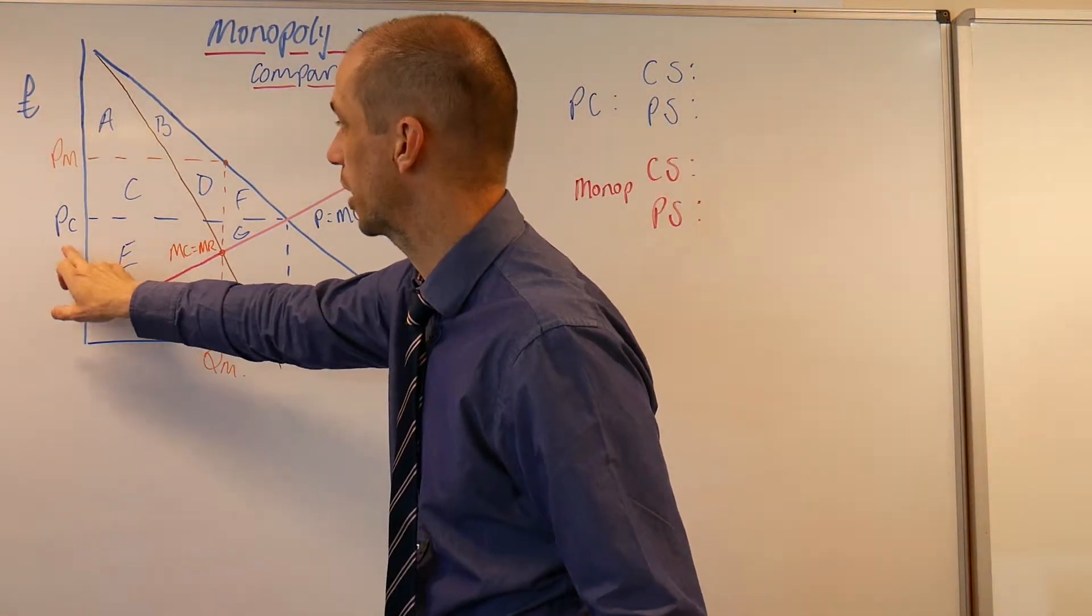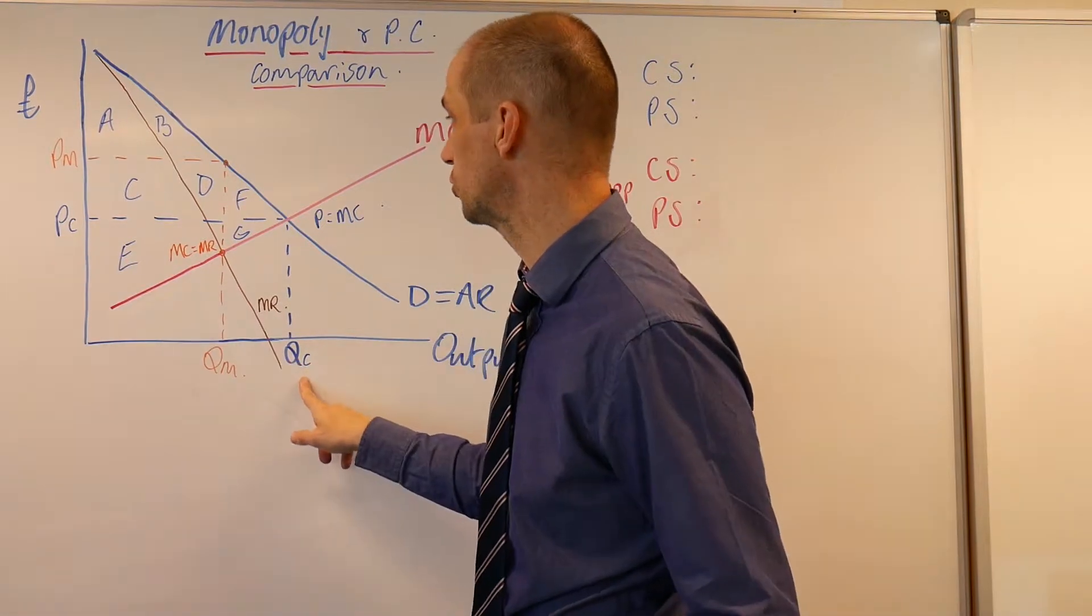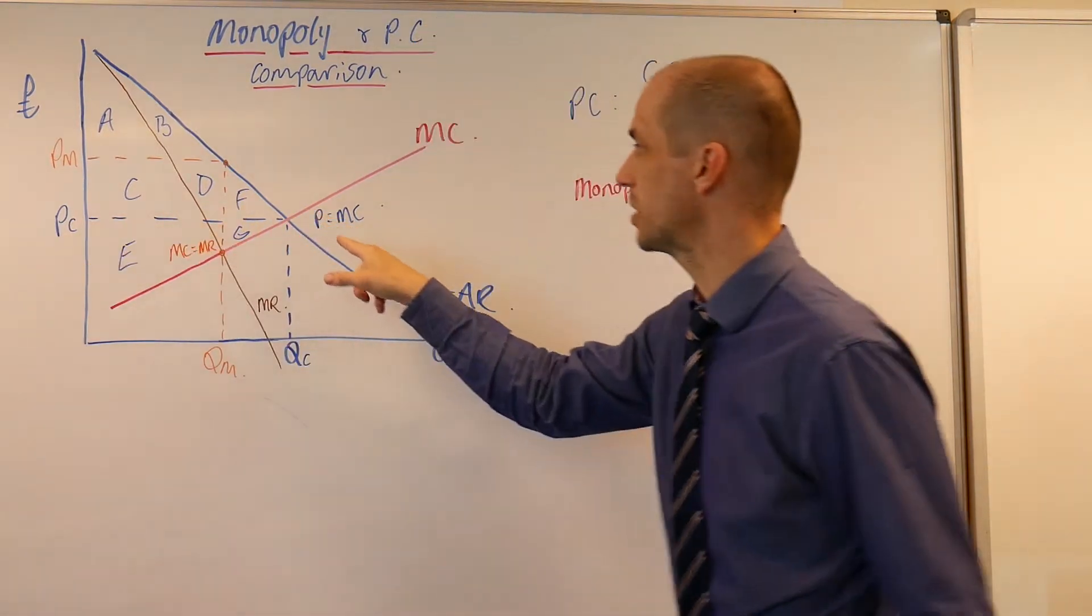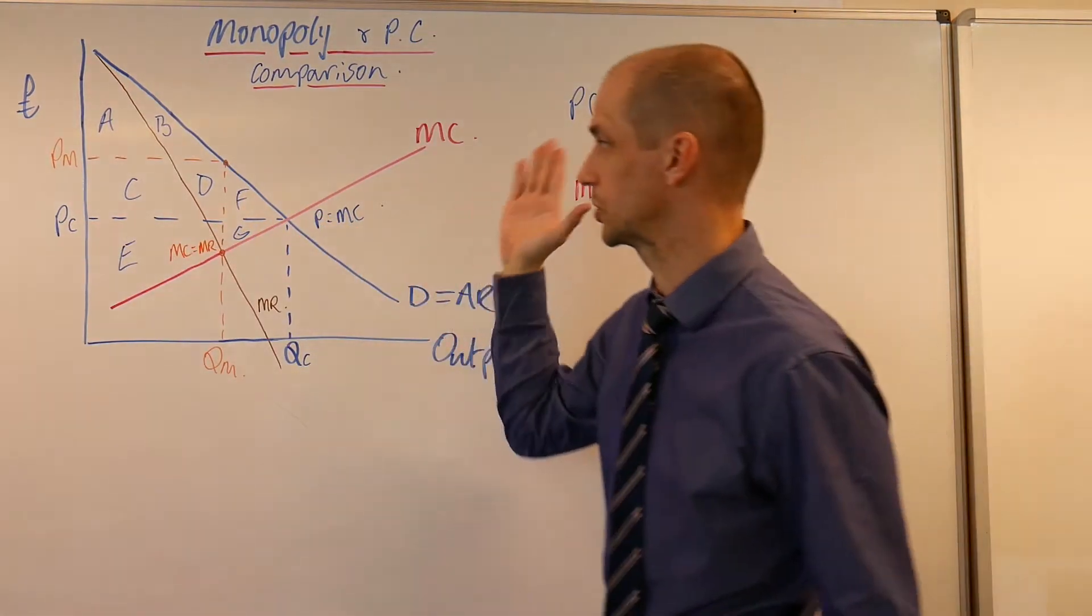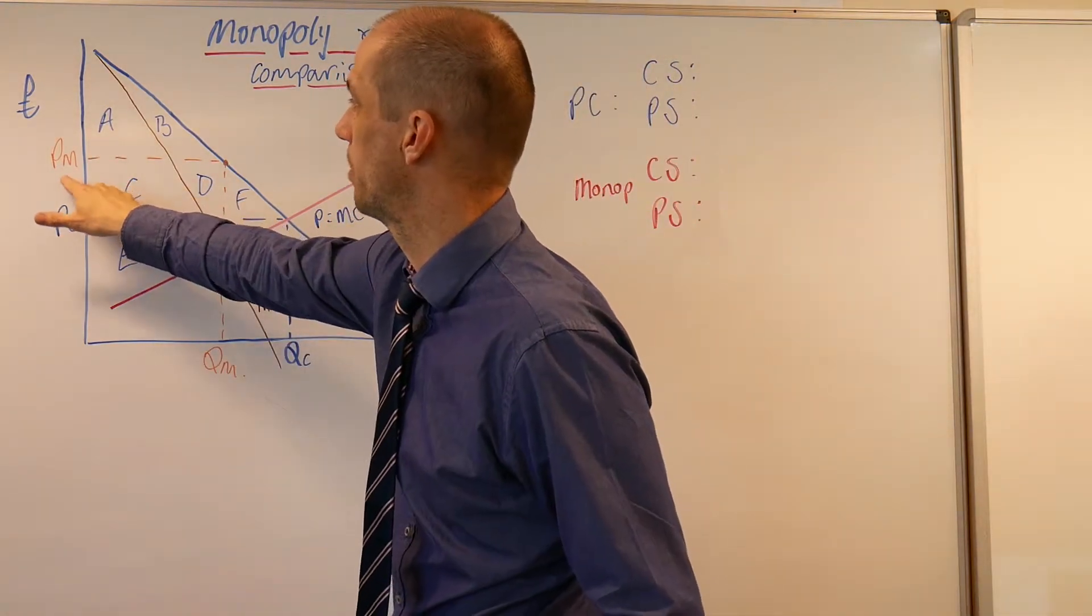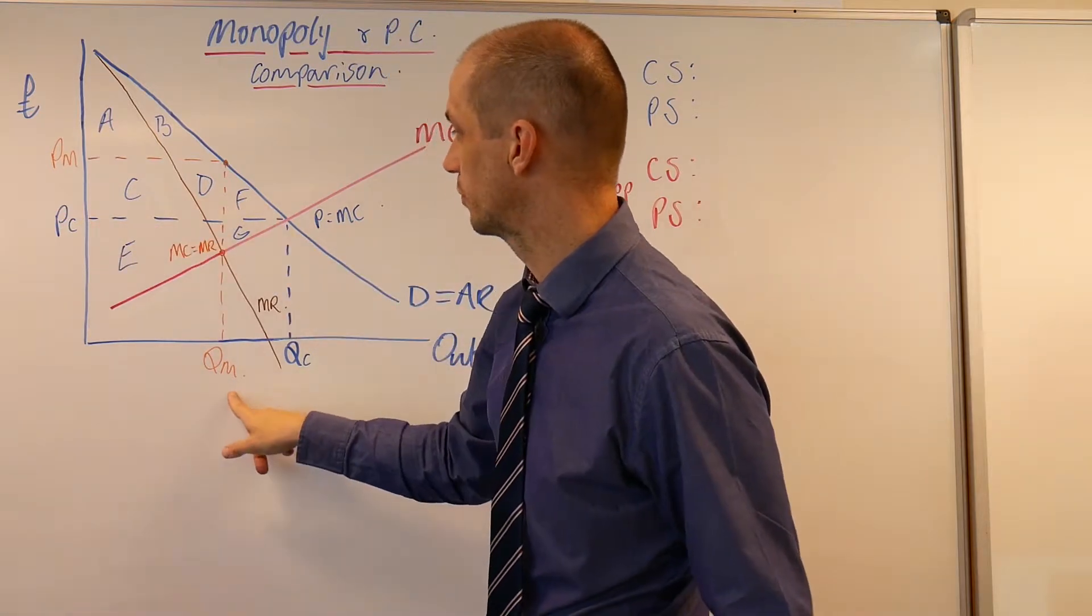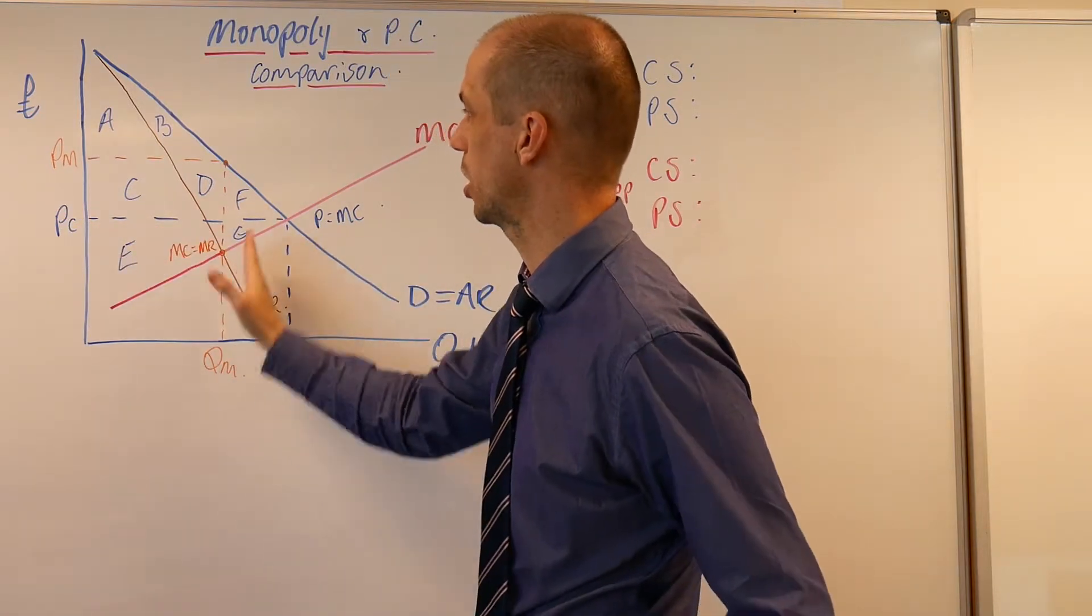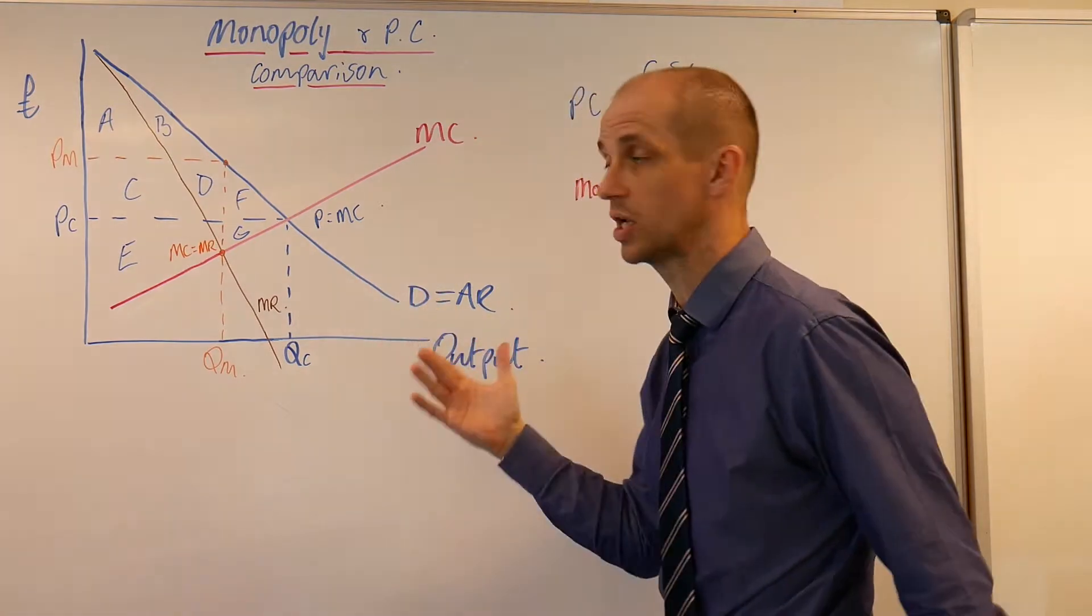The competitive market outcome is PC and QC, where price equals marginal cost - allocatively efficient. Meanwhile, for a monopoly, we've got a price level of PM and output level of QM, so restricted output and higher price as we've seen before.